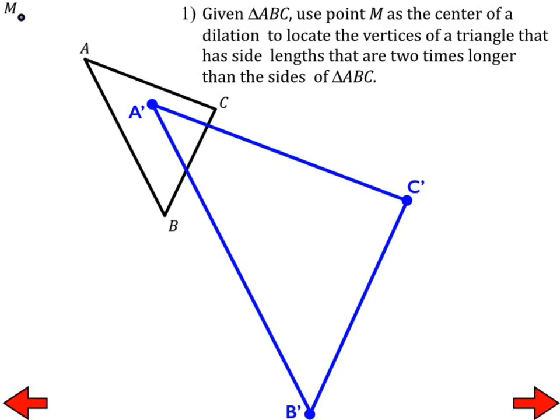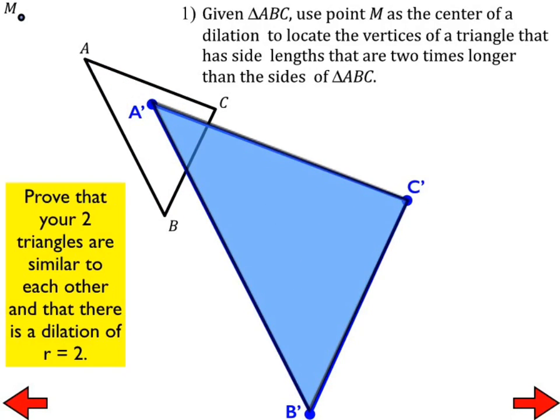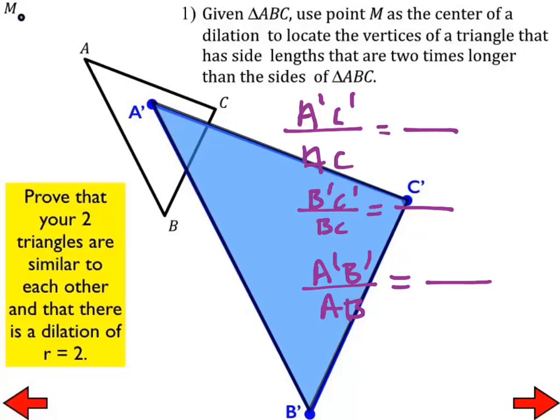So now, what we need to do is we need to prove that as I dilate this thing, there it is, I want you to prove that the two triangles are similar to each other. Now there's two ways of doing that, or there's two things you should be doing. One of them is comparing the side lengths to the pre-image and the image and making sure that they are proportional. So go ahead and do that. And while you're doing that, I'm going to pass out a protractor so that you can then measure the angles to prove that the angles are congruent to each other.